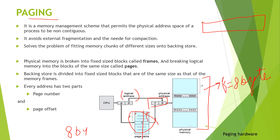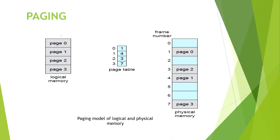The logical address is divided into two parts: one is the page number and the other is the offset. The page number tells us the frame number where that page is stored. We get the frame number and add it to the offset, thus getting one physical address. So there is a translation from logical address to physical address happening in a very efficient manner. This is the functionality of the paging technique.